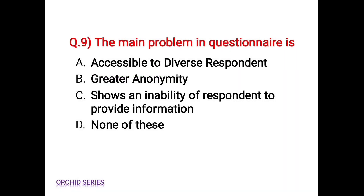Next question: the main problem in questionnaire is — Option A: accessible to diverse respondents, Option B: greater anonymity, Option C: shows an inability of respondent to provide information, Option D: none of the above. The correct answer is Option C, shows an inability of respondent to provide information.